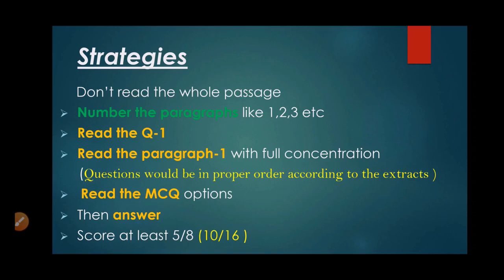Keep in mind that there is no need to read the whole passage of 750 to 800 words. First of all, what you have to do is number each paragraph in the passage — paragraph number 1, paragraph number 2, paragraph number 3, 4, 5, 6, and so on. After numbering the paragraphs, you will read question number 1, then read paragraph number 1 from the passage with full concentration.